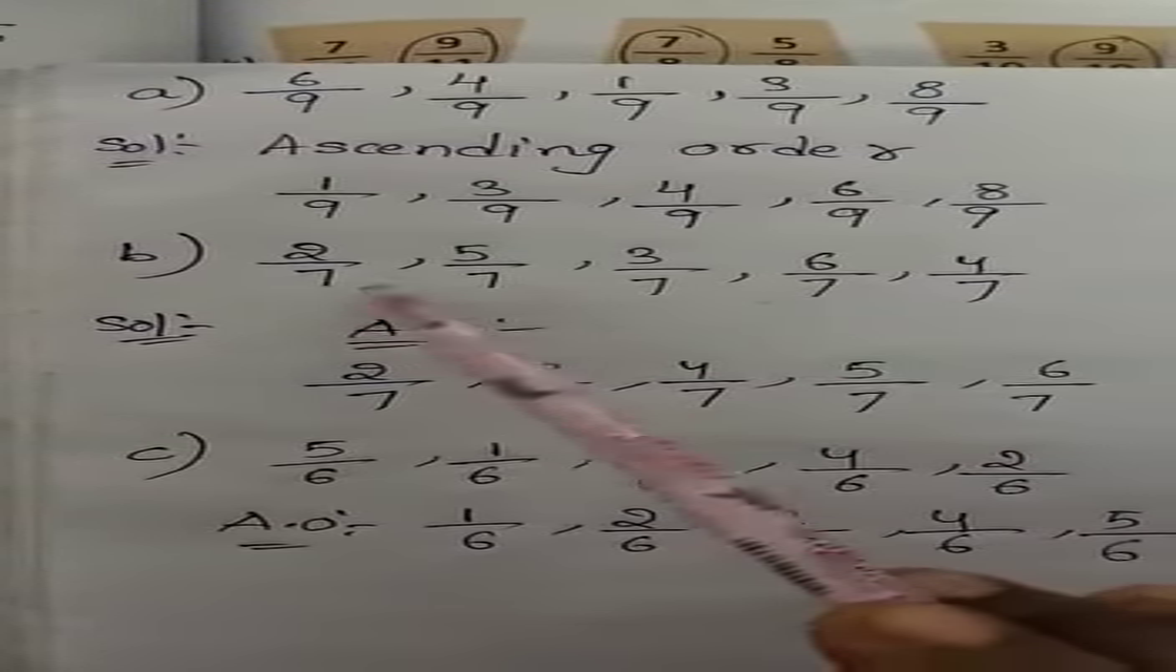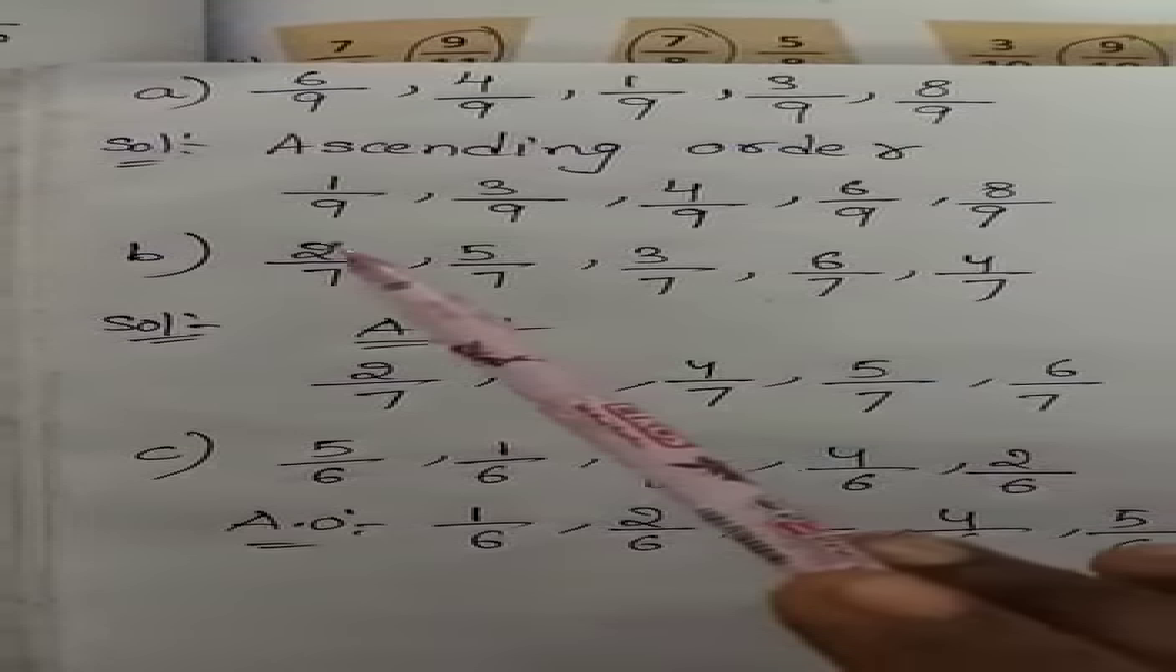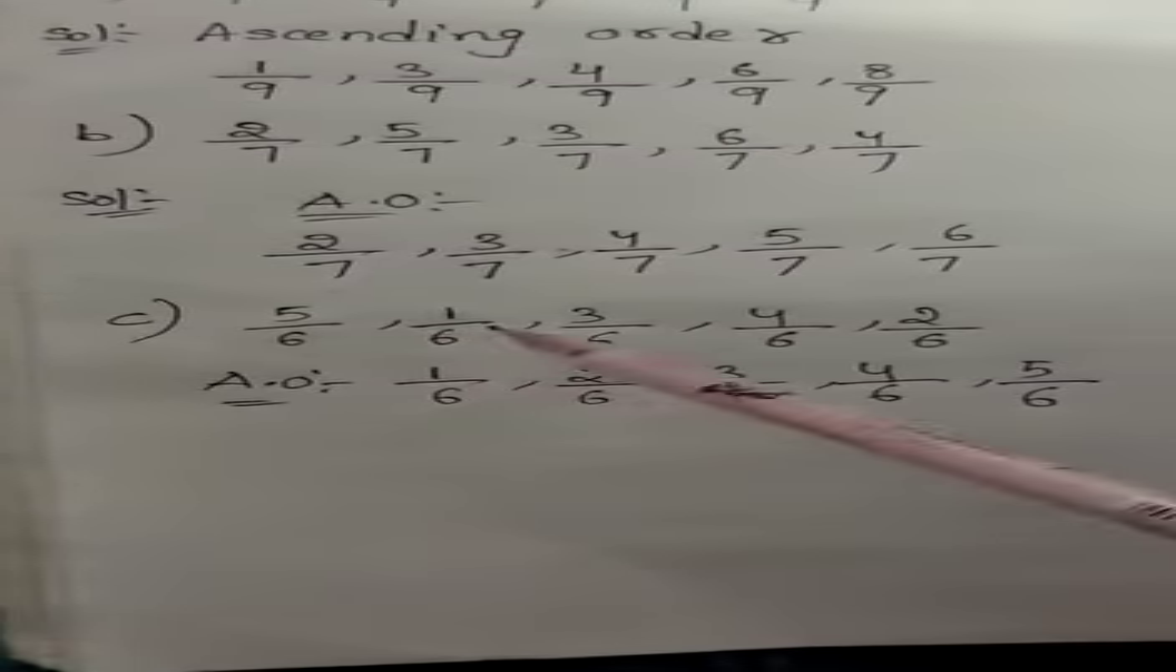Next B: 2/7, 5/7, 3/7, 6/7, 4/7. Write them as 2/7 next, then in order.